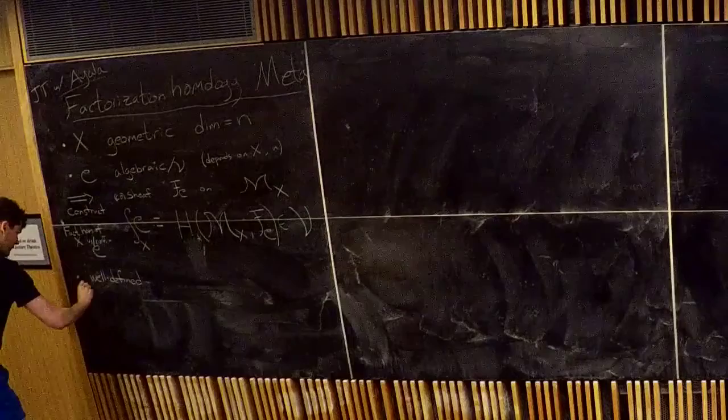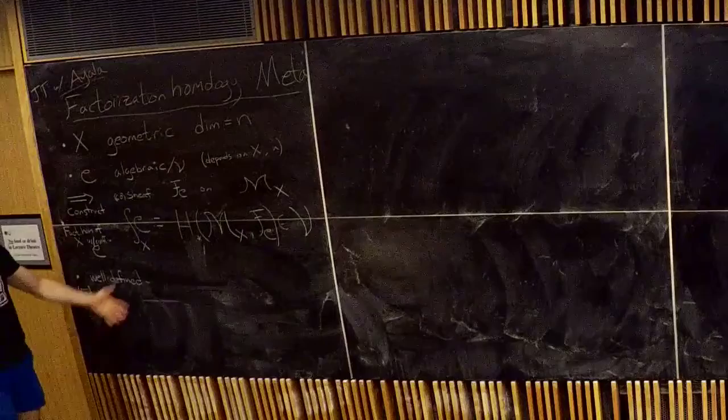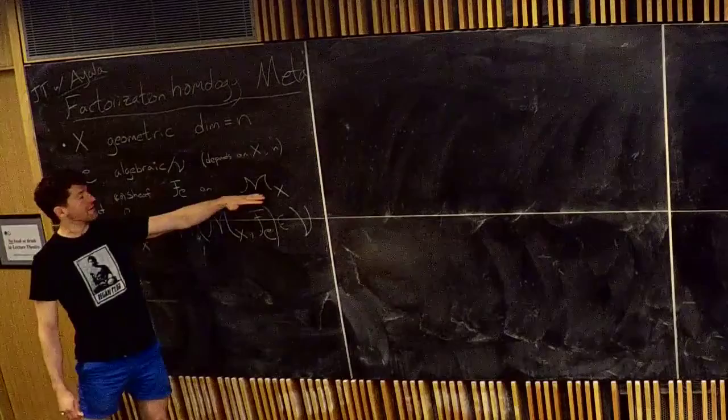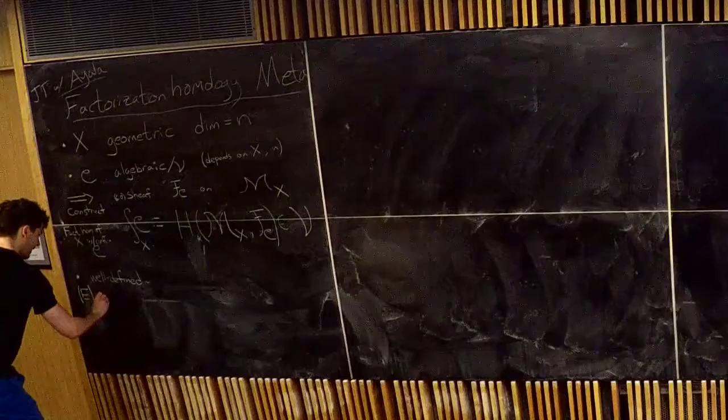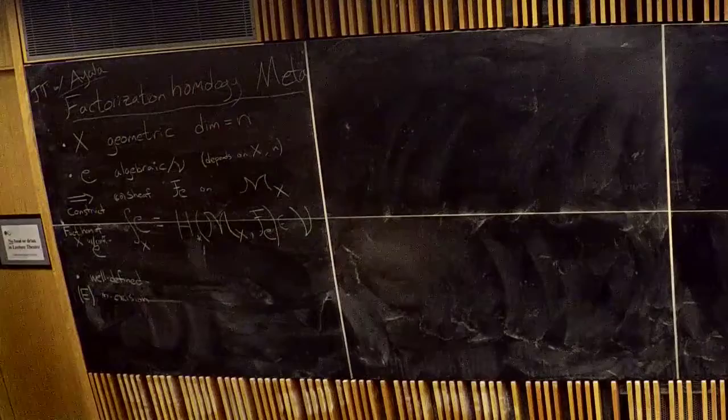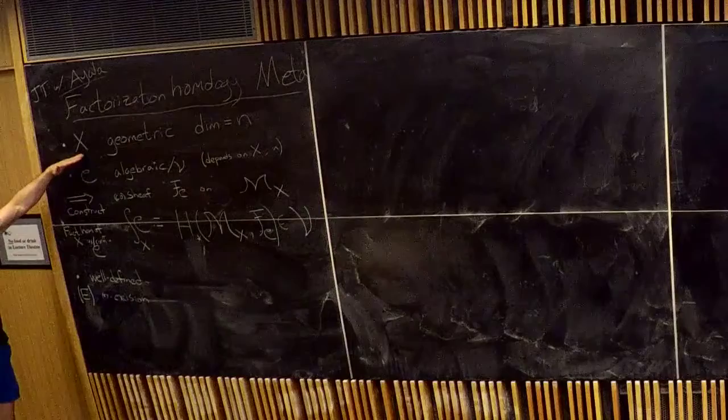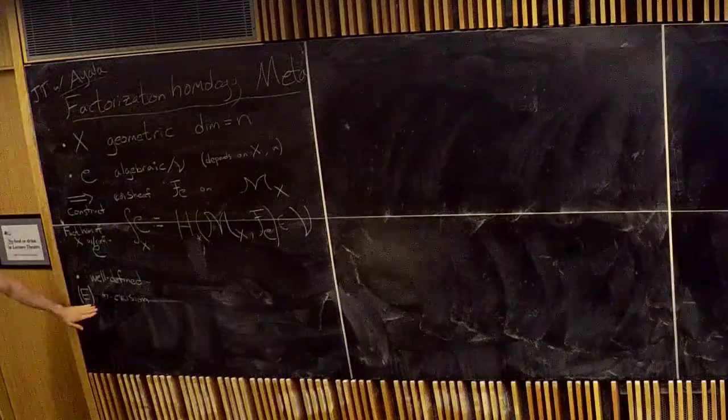The next feature, call it E, is that since everything lives as a sheaf theory on some space, you can make local-to-global arguments. By the very nature of this definition, it satisfies excision on M_X. So you have Mayer-Vietoris sequences — whatever this space was, you can do excision on it. Note this satisfies excision on M_X, not on X itself, since this was a sheaf on M_X.